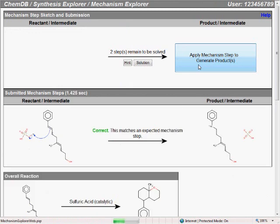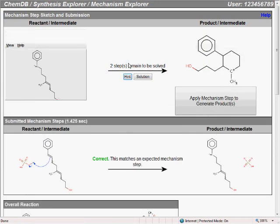If you get stuck on any of the mechanism problems, similar to the synthesis problems, you can always just ask for a hint. This will load the next expected step's reactants into the sketcher and also show you a picture of the expected products that would result after the mechanism step. All you have to do then is draw the arrows on the reactants that will lead to the expected product shown.